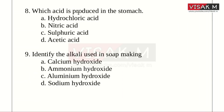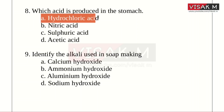Seventh: Which acid is produced in the stomach? Option A: Hydrochloric Acid. B: Nitric Acid. C: Sulfuric Acid. D: Acetic Acid. The right answer is Option A, Hydrochloric Acid — HCl is the acid produced in the stomach.